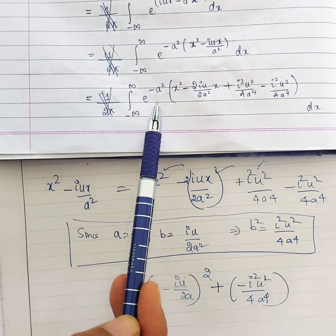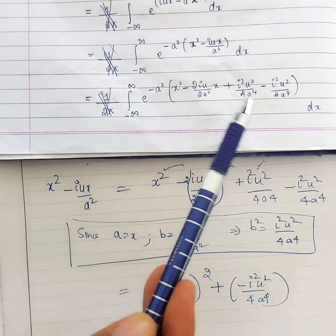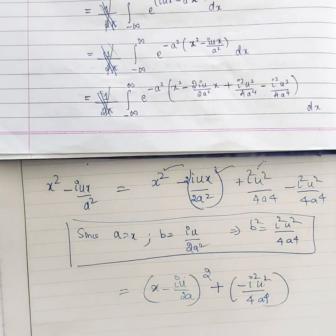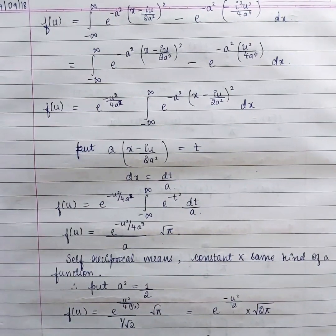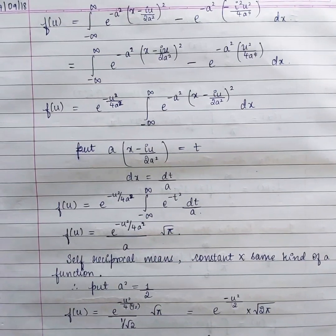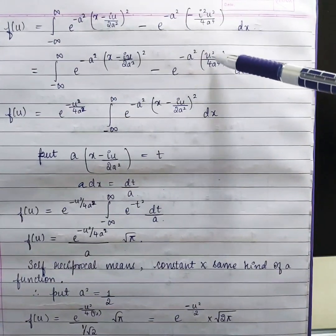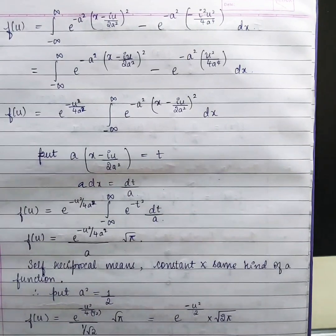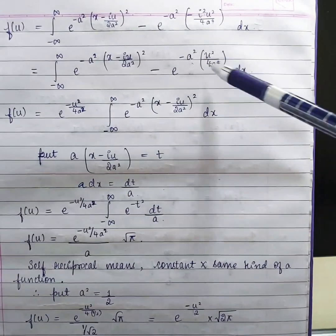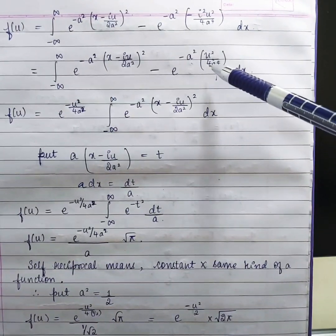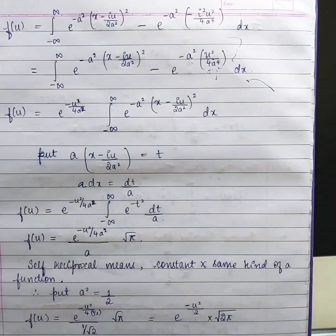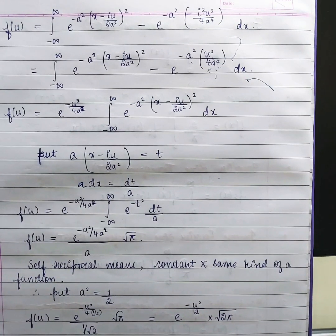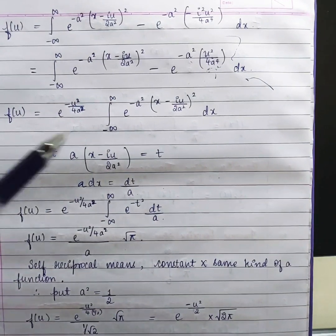When we multiply by -a² outside, the last term becomes: -a² × (-i²u²/4a⁴). Since i² = -1, the two negatives make a positive, and a² cancels with a⁴ to give e^(-u²/(4a²)). This is a constant with respect to x, so we throw it outside the integral. Inside remains e^(-a²(x - iu/(2a²))²).